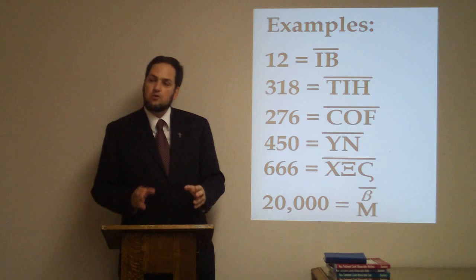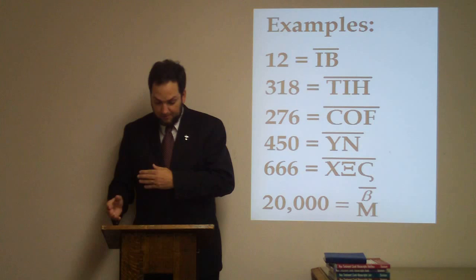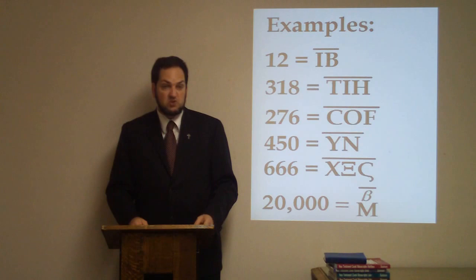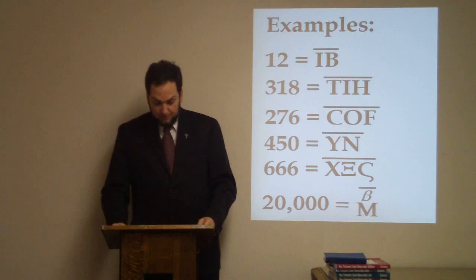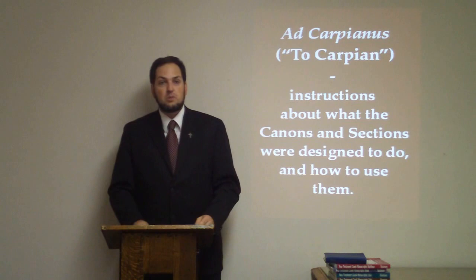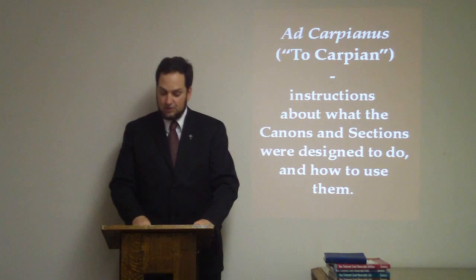Now let's return to our main subject. In manuscripts of the Gospels, before the beginning of the Gospel of Matthew, one often finds a letter and a series of charts. The charts are the Eusebian Canons. They provide the reader with the means to cross-reference parallel passages or thematically similar passages of the Gospels. The letter is known as Ad Carpianus, or Ad to Carpian. We don't know exactly who Carpian was, and it does not really matter. The author of the letter was Eusebius of Caesarea, an influential bishop in the early 300s.